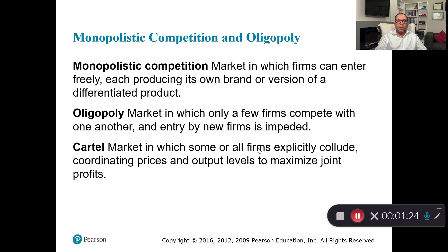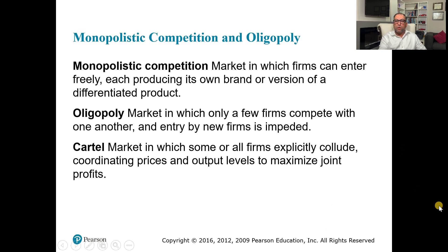How do we define monopolistic competition? It is a market in which firms can enter and exit freely, each producing its own brand. Every firm in this market is producing its own brand, meaning the firm has a monopoly over its own brand or version of a differentiated product. The main characteristic compared to a competitive market is product differentiation. For example, toothpastes like Colgate and Sensodyne are different products — all toothpastes, but with their own names, brands, and different prices.